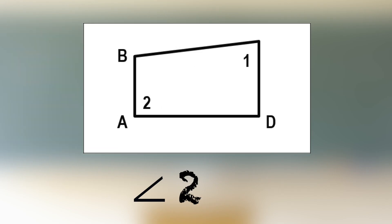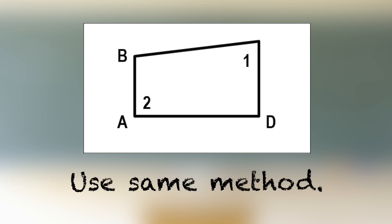In this example, angle 2 can be labeled as angle BAD or angle DAB, or sometimes angle A. All labels are correct. When you label angles in a figure, try to use the same method for each of the angles. Otherwise, it could be confusing for the person trying to identify the names of each angle.